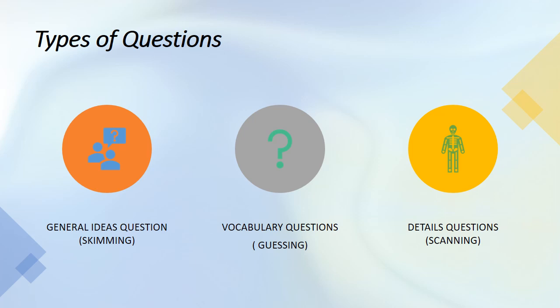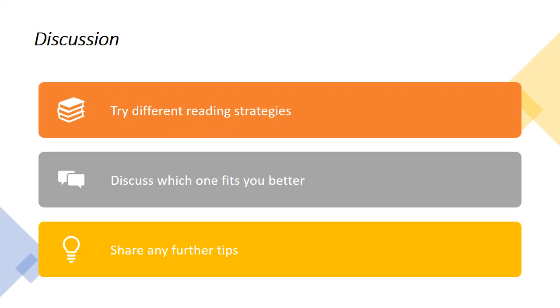There are three types of questions in the exam. General idea questions ask about your point of view or a general idea, requiring only skimming. Vocabulary questions require guessing — you need to infer the meaning of words based on the words before and after them, using context. Details questions require scanning, because you are looking for specific information like a date or a name.